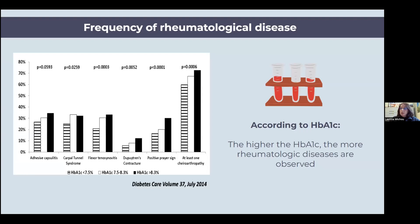Rheumatological conditions associated with type 1 diabetes are very common. Usually, they are regrouped under the name of chiroarthropathy. 'Chiro' is for hand, and 'arthropathy' is for joint. This word, chiroarthropathy, will regroup different conditions.